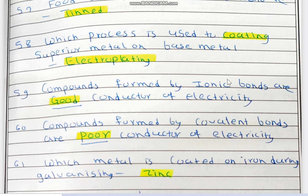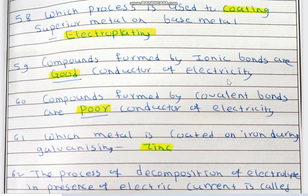Which process is used to coat a superior metal on base metal? Electroplating or electrocoating. This process is used for coating superior metal on base metal.